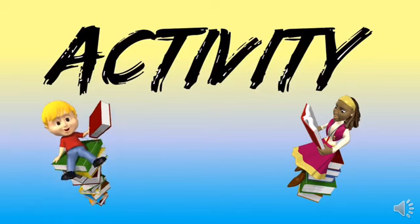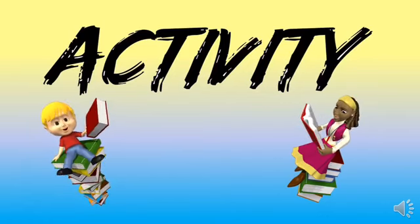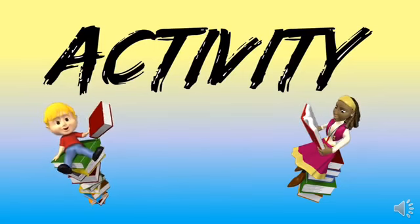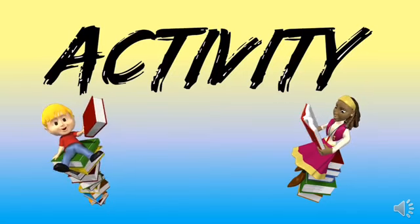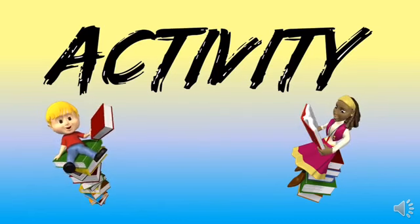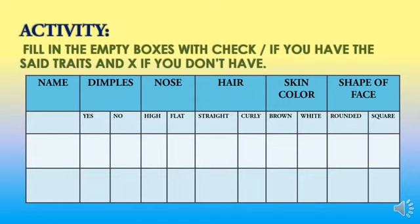Now let's proceed to our activity. I want you to prepare a pen and a paper. I want you to listen very carefully. Is everyone ready? I want you to fill in the empty boxes — put a check if you have the said traits, and an X if you don't have them. Now I want you to write your name first. Now look at the box on the screen.